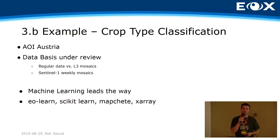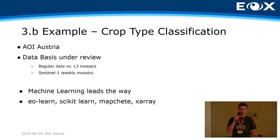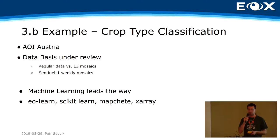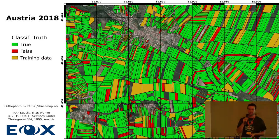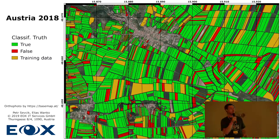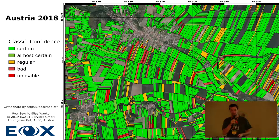Now we're working on crop type classification based on mosaic data and real time series. We read the data, make arrays from it, interpolate in between, and get a nice dataset for crop type classification utilizing both Sentinel-1 and Sentinel-2. It's been done for Austria using scikit-learn, map-chetti, and xarray. The result here shows classification validity — red fields were classified wrongly, orange ones are training data and don't count. The accuracy is roughly over 90 percent.